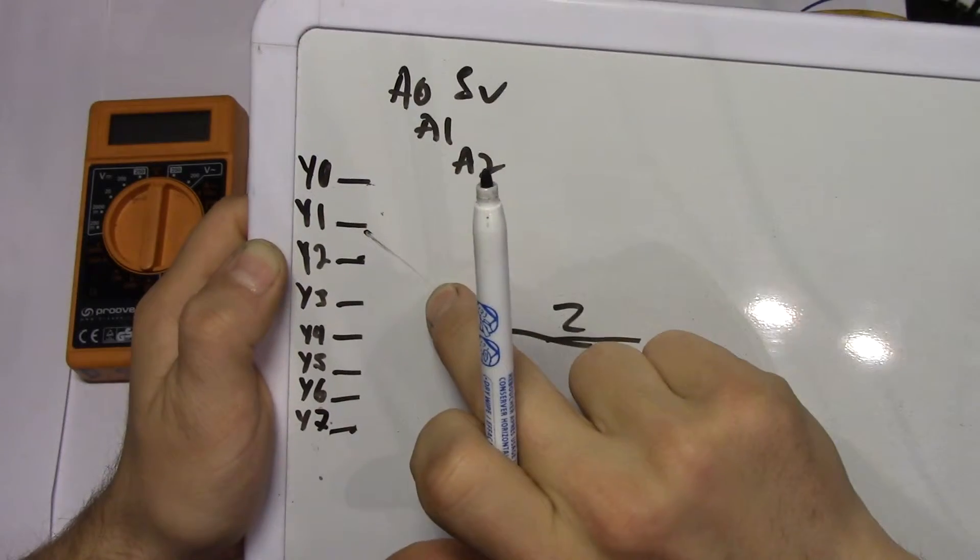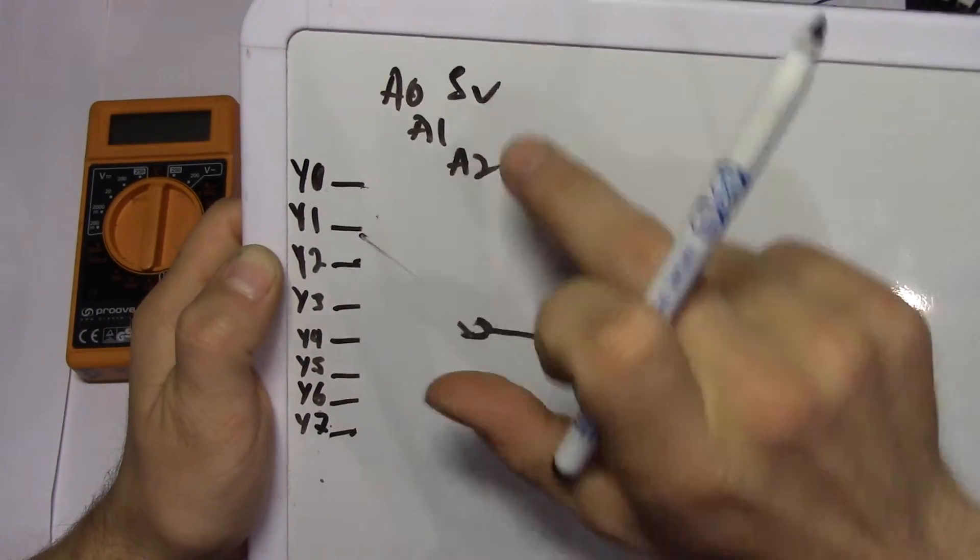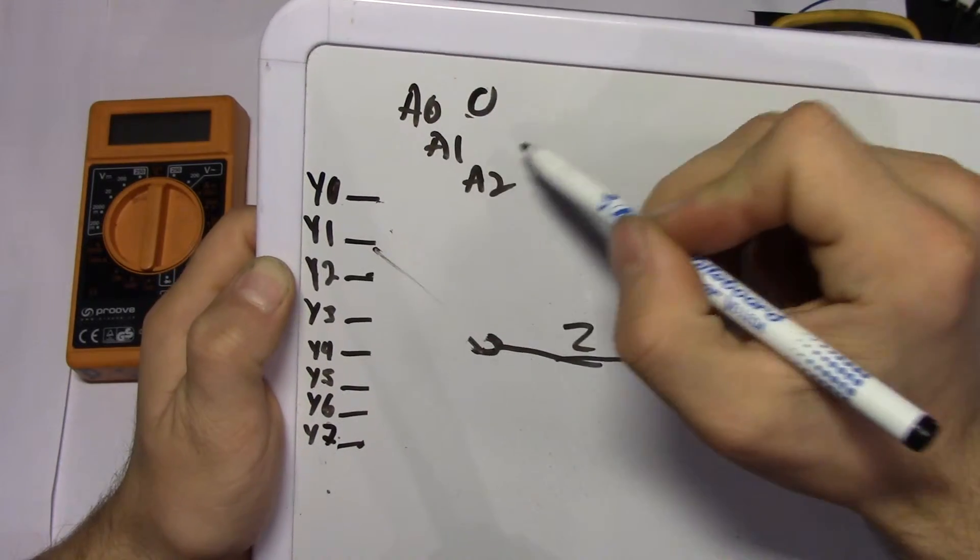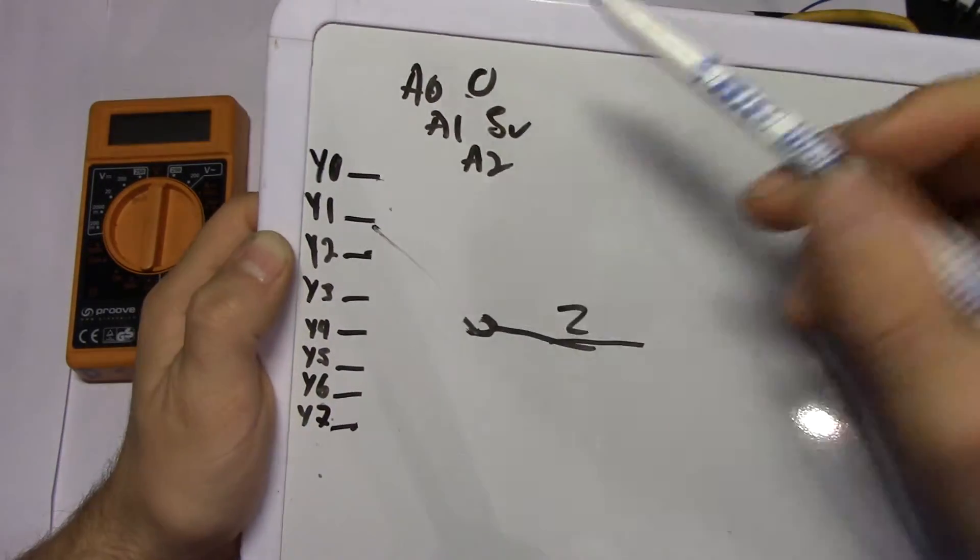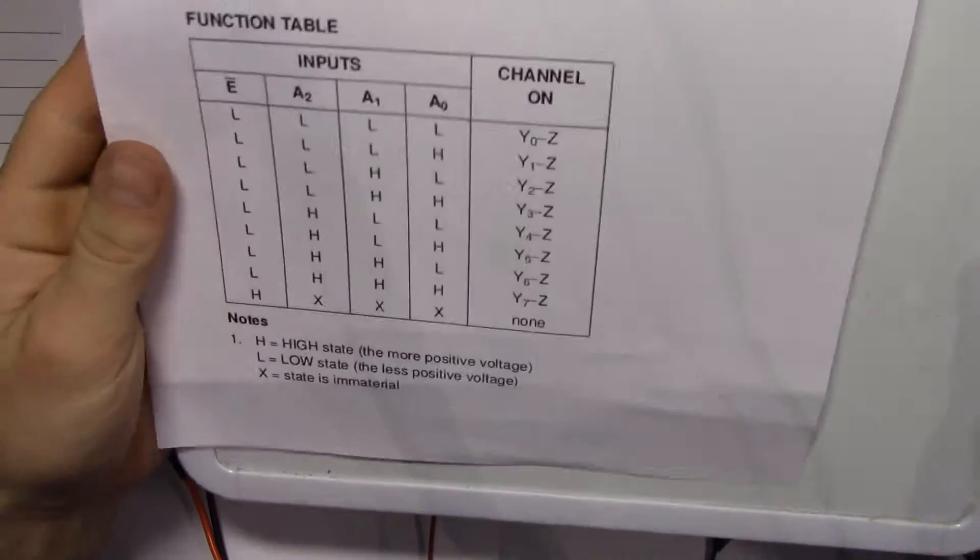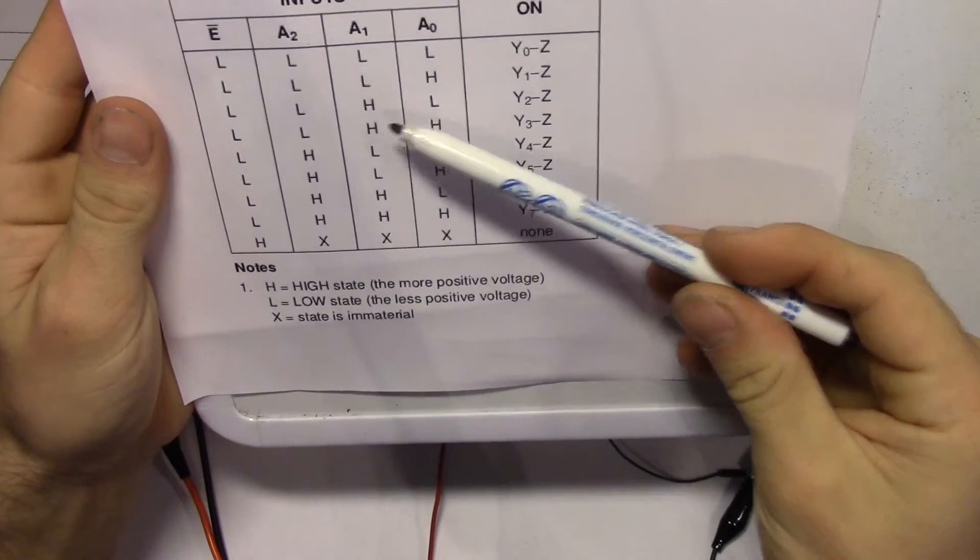And then what we can do is we can take that low again, to zero, and we can put the A1 to five volts. As you can see on the truth table, A1 five volts, set two. So that's connection here.